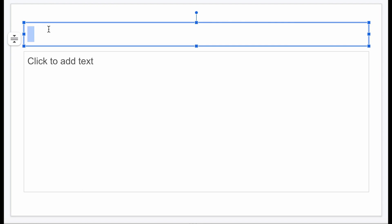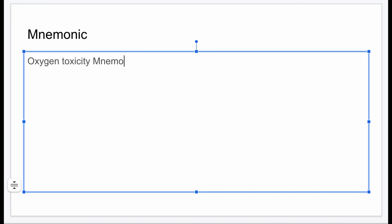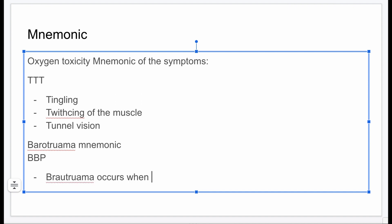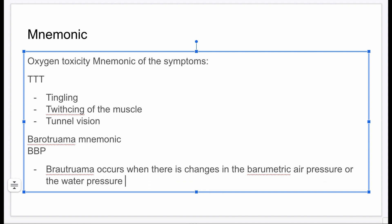Mnemonic time! For oxygen toxicity symptoms, remember 'TTT' — tingling and tunnel vision. For barotrauma, remember that 'B' and 'P' are similar-sounding — barotrauma occurs when there are changes in barometric pressure, air pressure, or water pressure. If any mnemonics were missed, please let me know in the comments. Please subscribe if you enjoyed the video!